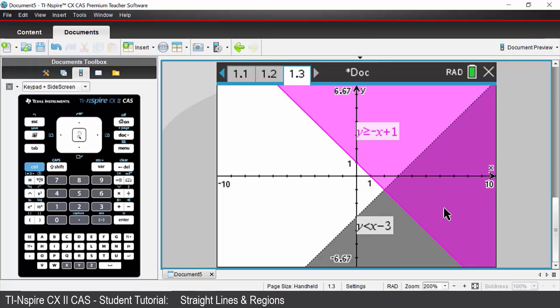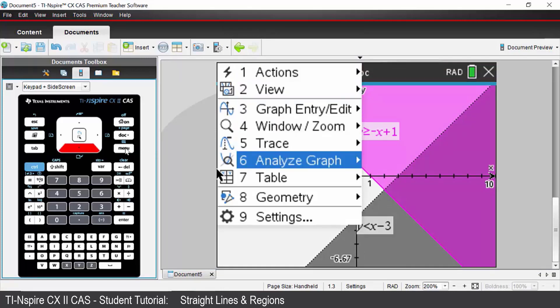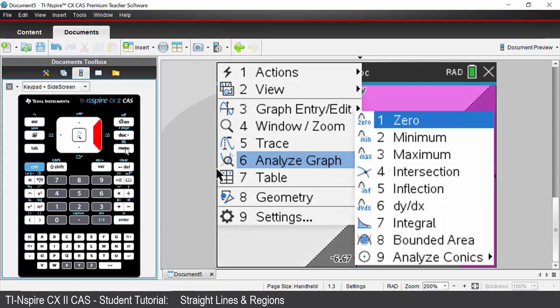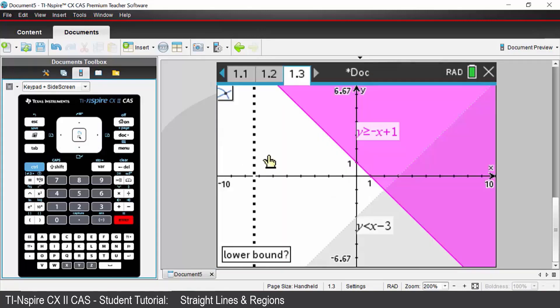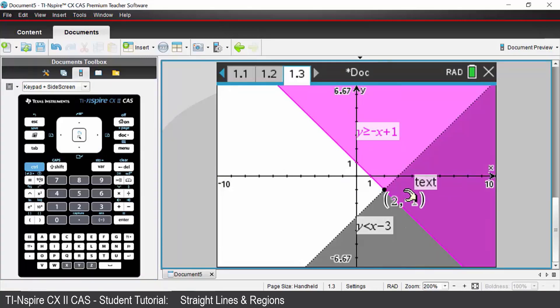Again, if we wanted to find the intersection point of those two lines, we could again go menu, come down to option 6 which is analyze graph, and we're going to find the intersection. Lower bound, click just on the left. Upper bound, click just on the right, and you have the coordinates of the intersection point there also.